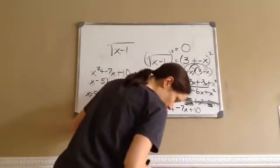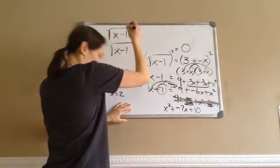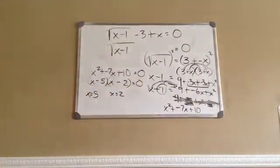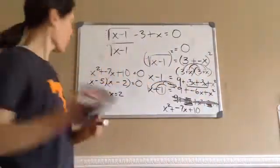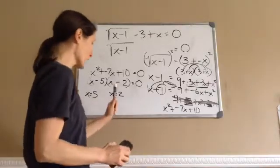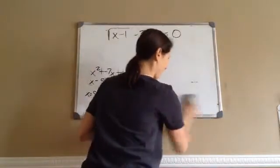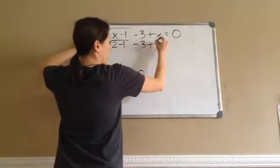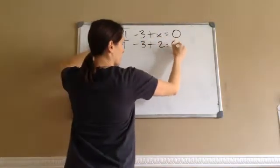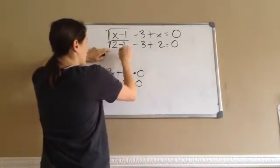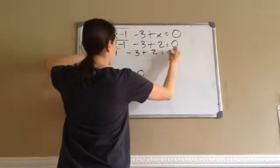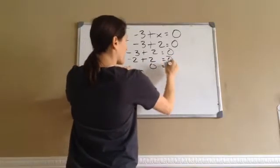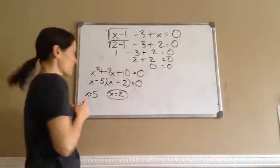Go back to the original problem: square root of (x − 1) minus 3 plus x equals 0. Try x = 2: 2 minus 1 is 1. Square root of 1 minus 3 plus 2 equals 0. Square root of 1 is 1. 1 minus 3 is negative 2. Negative 2 plus 2 is 0. 0 equals 0 — so x = 2 is correct.